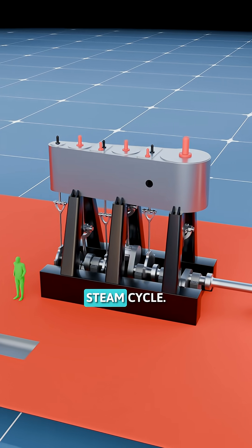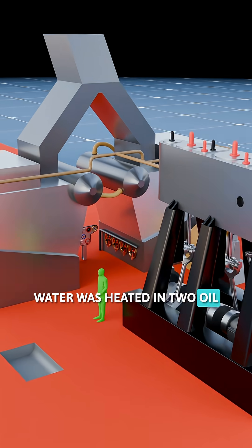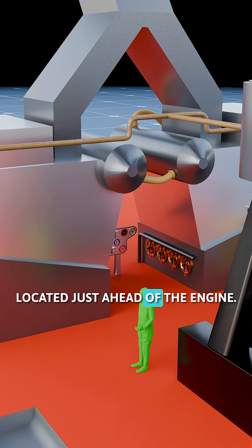The engine ran on a closed loop steam cycle. Here's how it worked. Water was heated in two oil-fired water tube boilers located just ahead of the engine.